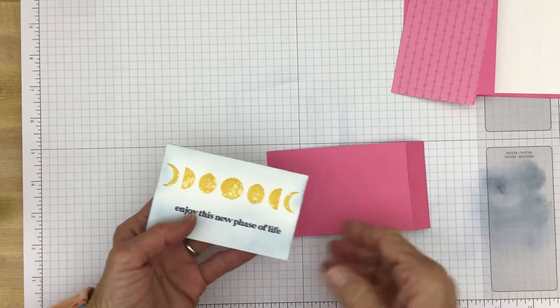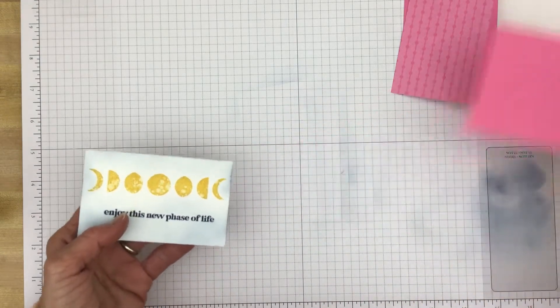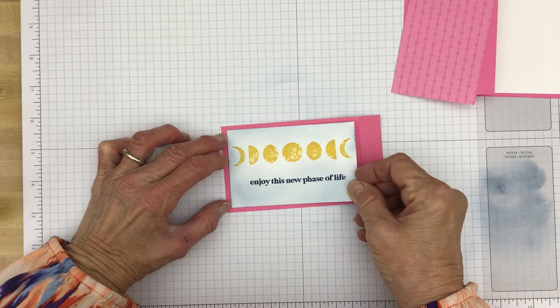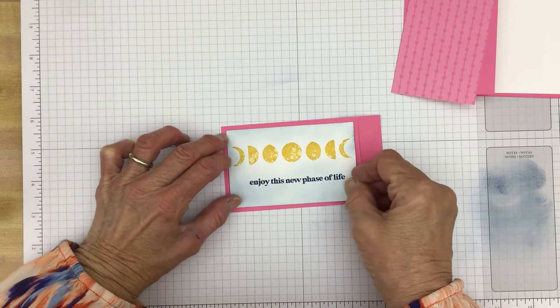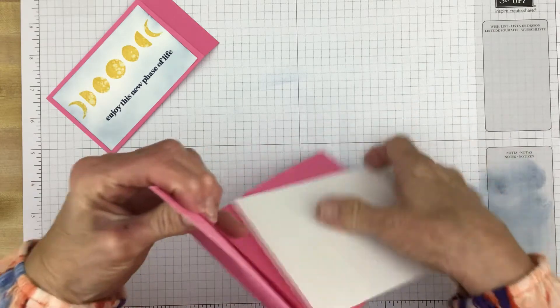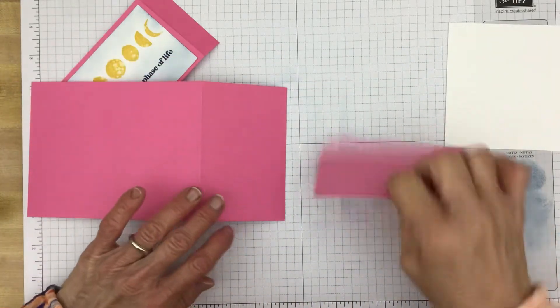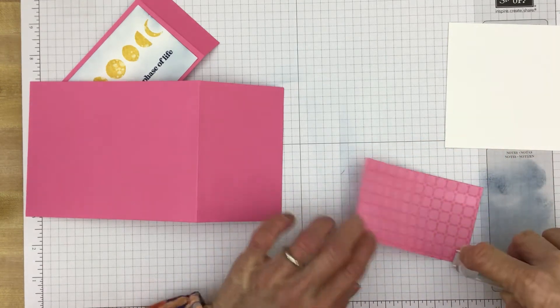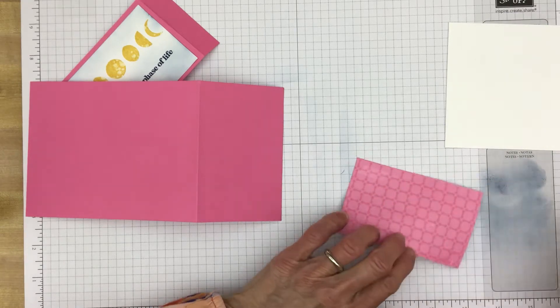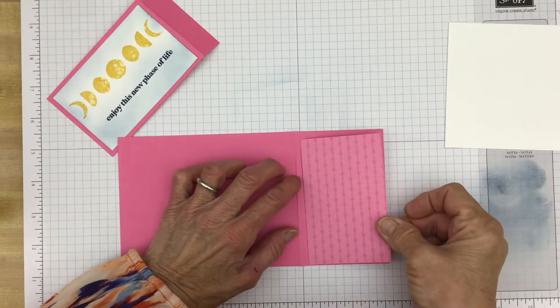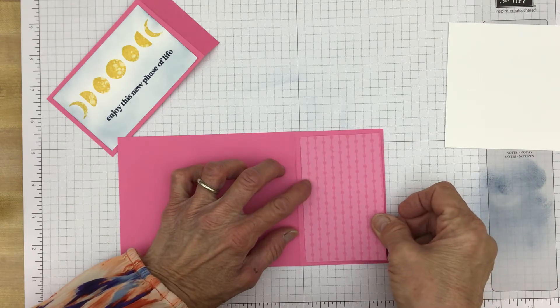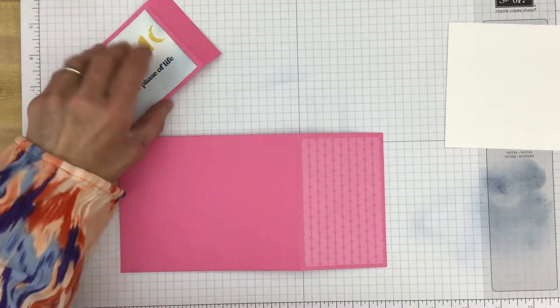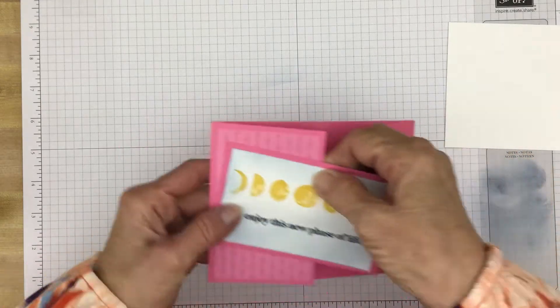Remember, the flap will go to the right. That's what we're going to attach to the card. So we'll keep it on that side. Line that up. Now we'll put our Designer Series Paper on the front of our card.